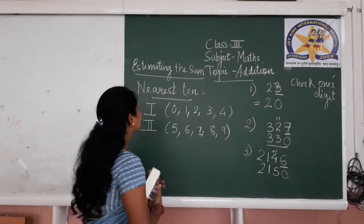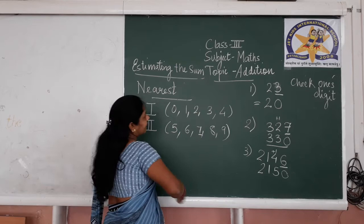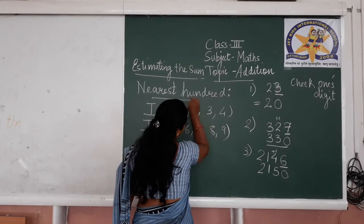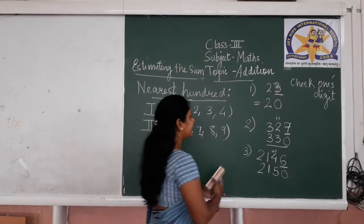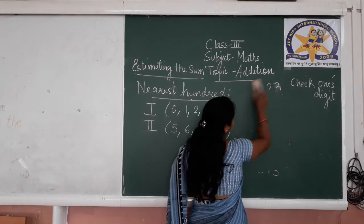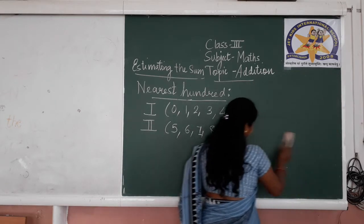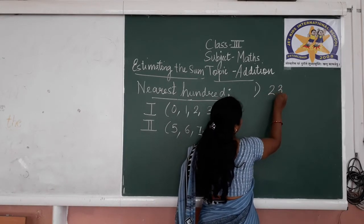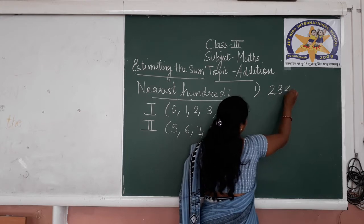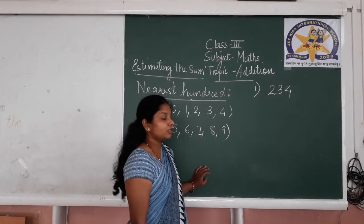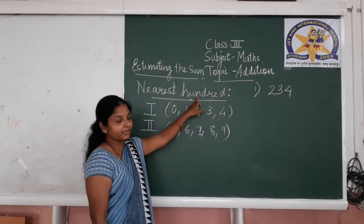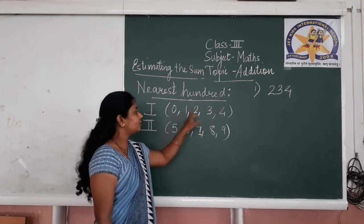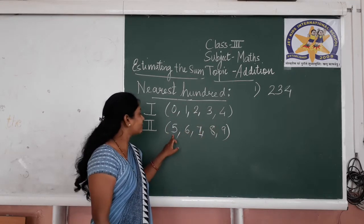Now, when I ask you to round off numbers to the nearest 100, the approach is similar. We are going to round off numbers to the nearest 100. Let us see by an example. Let us take a 3-digit number: 234. You have to round off to the nearest 100. Again, two groups are there — Group 1 has numbers 0 to 4, and Group 2 has numbers 5 to 9.